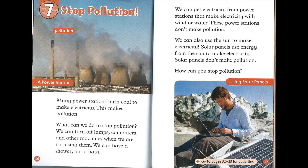Turn off electric machines when we are not using them. We can have a shower, not a bath. We can get electricity from power stations that make electricity with wind or water — these power stations don't make pollution. We can also use the sun to make electricity. Solar panels use energy from the sun to make electricity, and they don't make pollution.